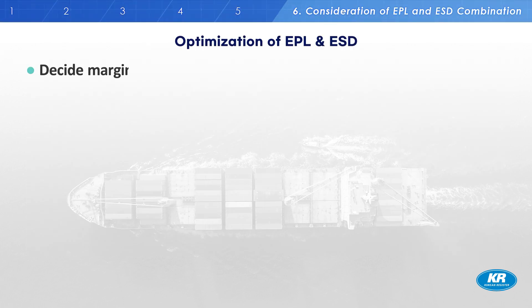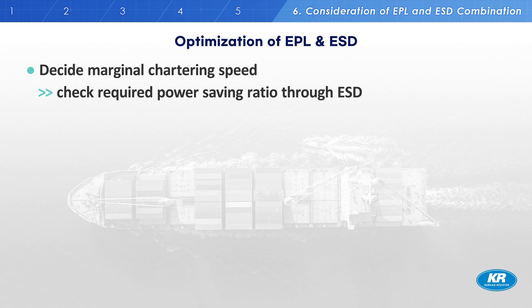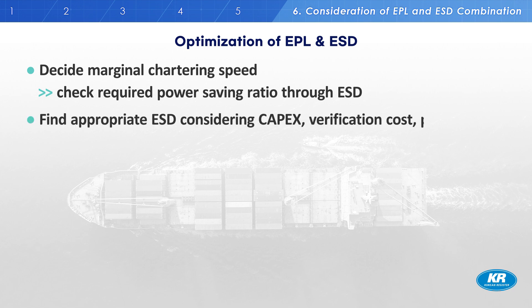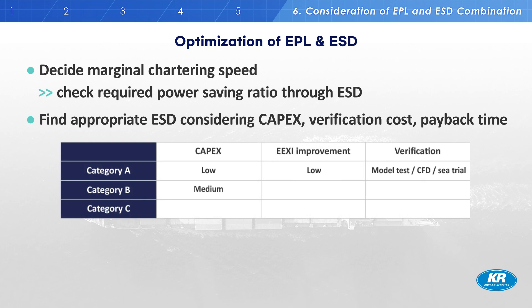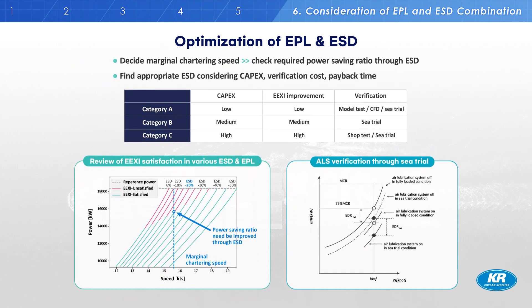In conclusion, if you want to install an ESD, you should first decide on your marginal chartering speed, then check the required power saving ratio you need to achieve through the ESD. It will require a number of EEXI calculations, after which you can select an appropriate ESD considering CAPEX, verification cost, and payback time. In the worst case, it may be necessary to abandon the current ship and build a new ship with higher energy efficiency. Thank you for watching our video. Our experts would be very happy to further answer any questions when you contact us via email or through our KR website.